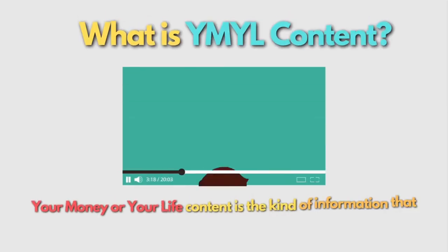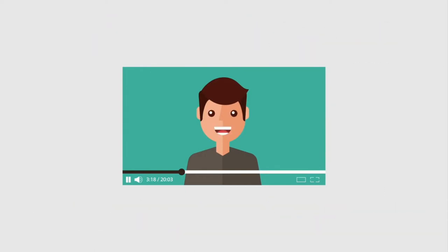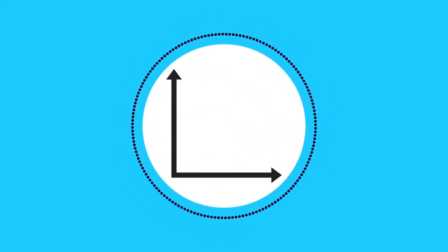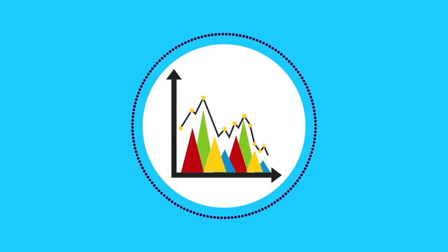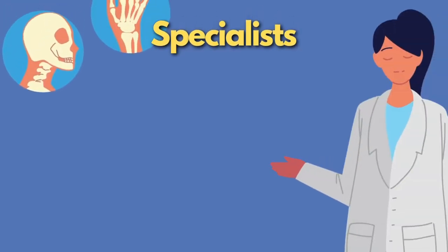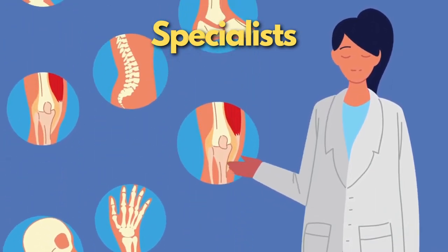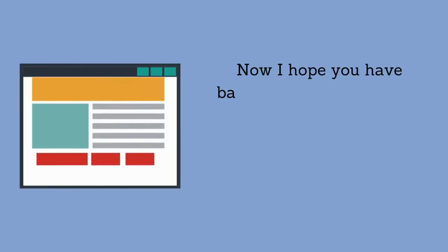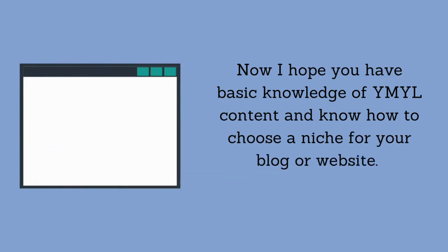'Your Money or Your Life' content is the kind of information that may have a direct influence on your visitors' happiness, health, safety, and finances. Creating a page with incorrect advice or information may impact people's lives and livelihoods, meaning the stakes are high. Google takes this type of content seriously since it wants to deliver accurate information — only specialists with relevant experience should dive into these niches.